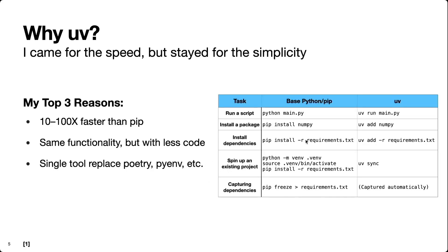To demonstrate the simplicity of uv, here I have various base Python/pip commands and the corresponding uv commands for various tasks. The syntax is very similar: running a script, `python main.py` becomes `uv run main.py`; installing a package, `pip install numpy` becomes `uv add numpy`; similarly `pip install -r requirements.txt` becomes `uv add -r requirements.txt`. A lot of the basic stuff is the same, but where we start getting big savings is the following.